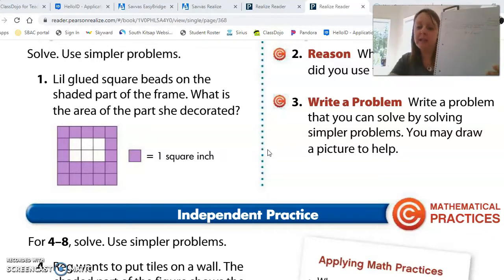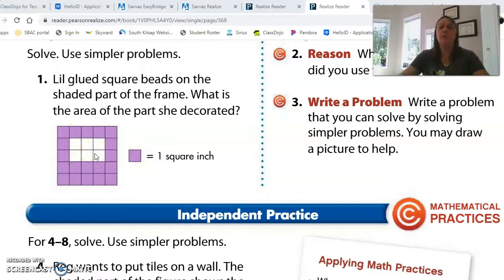And the area, once again, is always measured in square units. And it's also the amount inside of a shape. So it's how much is inside. So the very first thing I'm going to do is figure out what is the area of this entire purple shape. So I'm going to say the length. One, two, three, four, five.